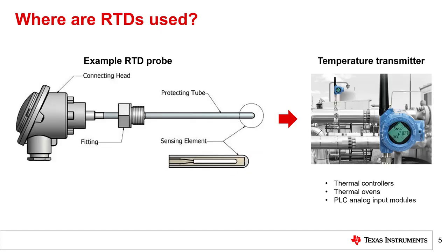Shown on the left is the mechanical housing of a typical RTD probe. The sensing element is inserted into a protecting tube to keep it from getting damaged. This protecting tube is attached to the connecting head, which allows the RTD housing to be held in place such that the sensing element can be inserted into the measurement media, usually a liquid. The sensor wires extend from the bottom of the connecting head to the measurement system. Common measurement systems include temperature transmitters used as part of an industrial control loop, thermal controllers, thermal ovens, and analog input modules for PLC systems.